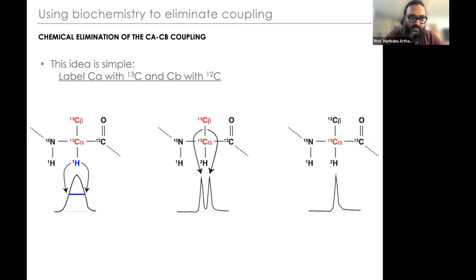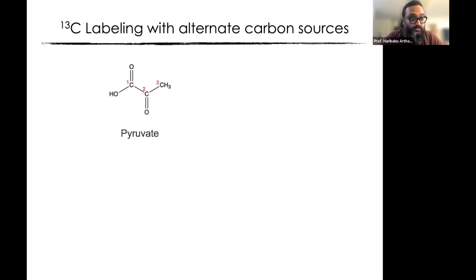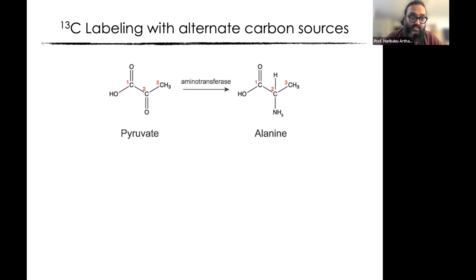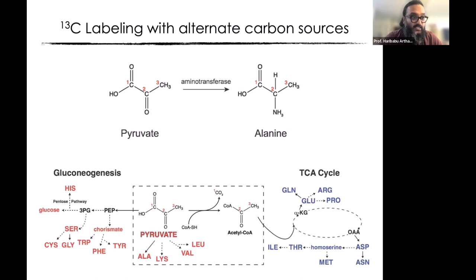Continuing with the idea of removing C-beta and making it 12C: we naively thought we could use pyruvate instead of glucose, which is traditionally used as a carbon source for isotopically labeled protein. Pyruvate is a three-carbon system available commercially labeled at position 1, 2, or 3, or any combination. If pyruvate is the sole carbon source and you use pyruvate labeled only at carbon 2, alanine — made by a simple aminotransferase — will be labeled at C-alpha but not at C-beta. Absolutely wonderful — exactly what we wanted.